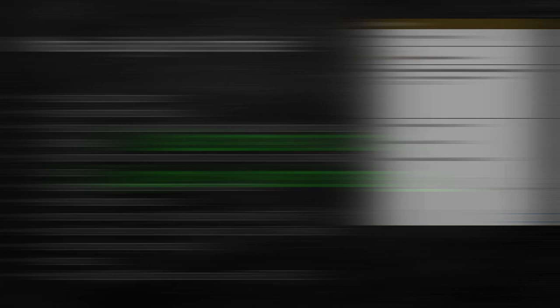So, what is a digital certificate? You see that image on the right? That's what a digital certificate looks like. A digital certificate is simply a digital document used to trust someone or something on a network or internet. It is also known as a public key certificate. They follow X.509 specification as described in RFC 5280. A certificate contains information which is always digitally signed, therefore the name digital certificate.